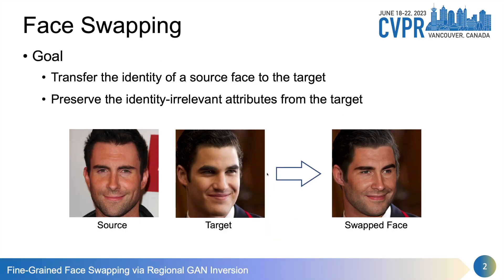Face swapping aims at transferring the identity of a source image to another target face. At the same time, we hope to preserve some attributes of the target face that are irrelevant to the identity, such as expression, head pose, and background. In the ideal case, we can recognize the identity from the swapped face, and the expression, pose, and background are from the target.